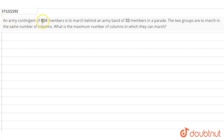Hi students. The question is: an army contingent of 616 members is to march behind an army band of 32 members in a parade. The two groups are to march in the same number of columns. We have given that the number of army contingent members is 616 and the number of army band members is 32.